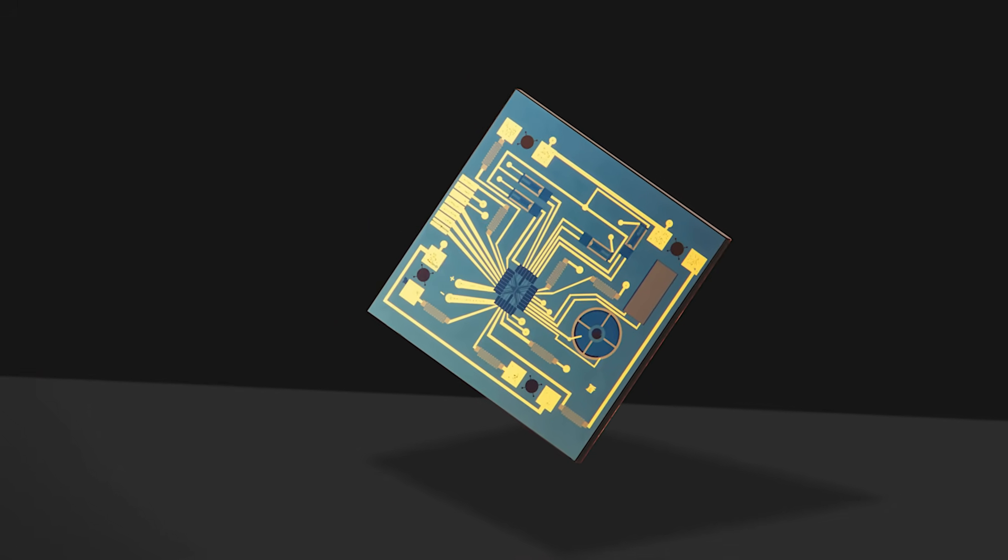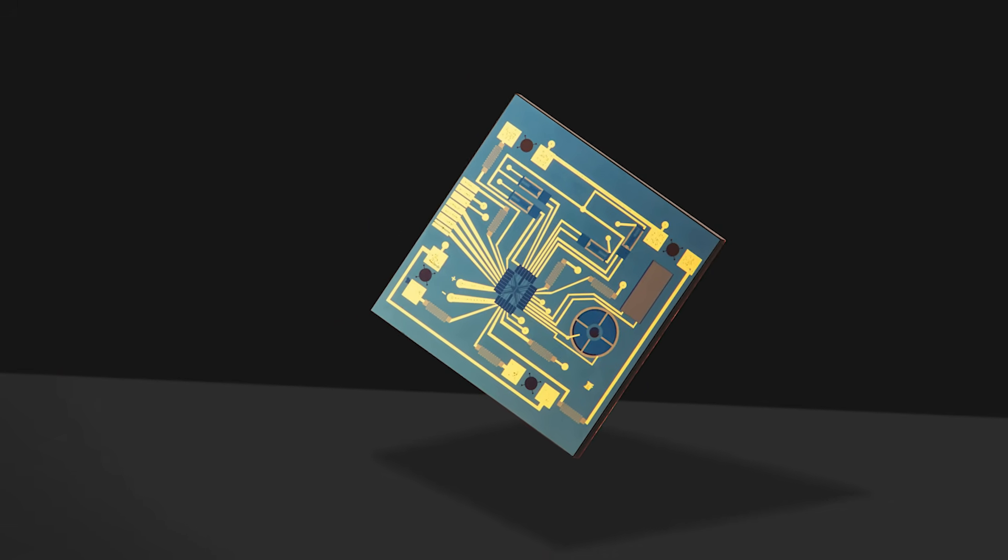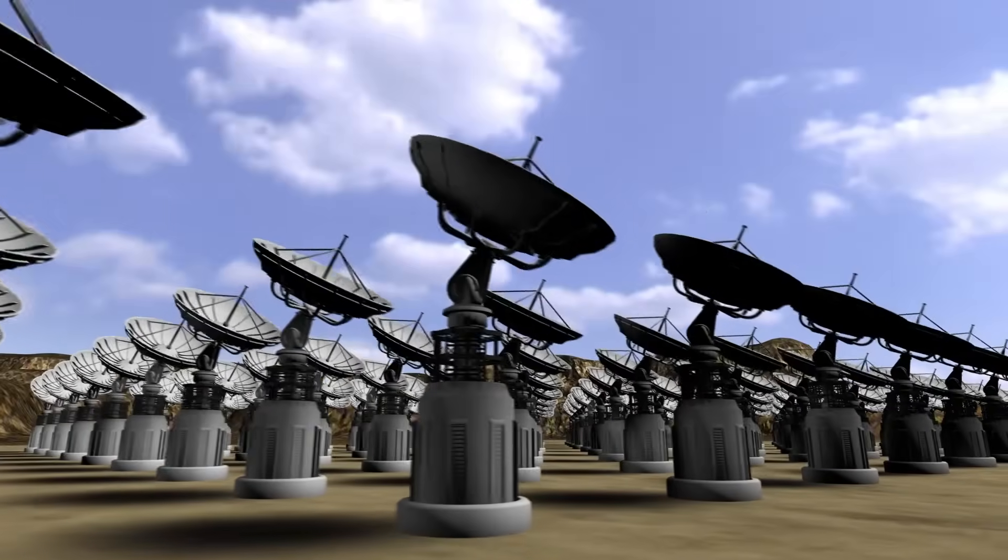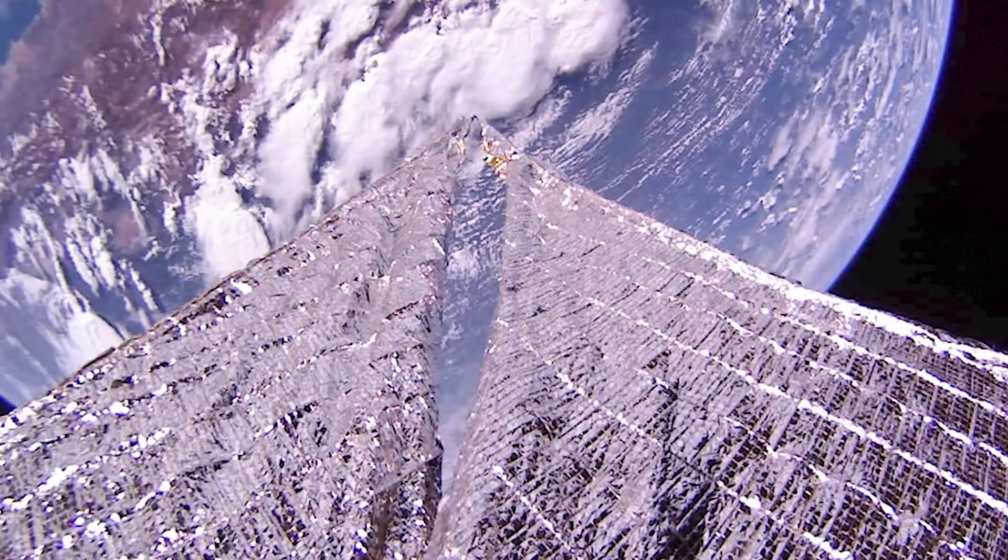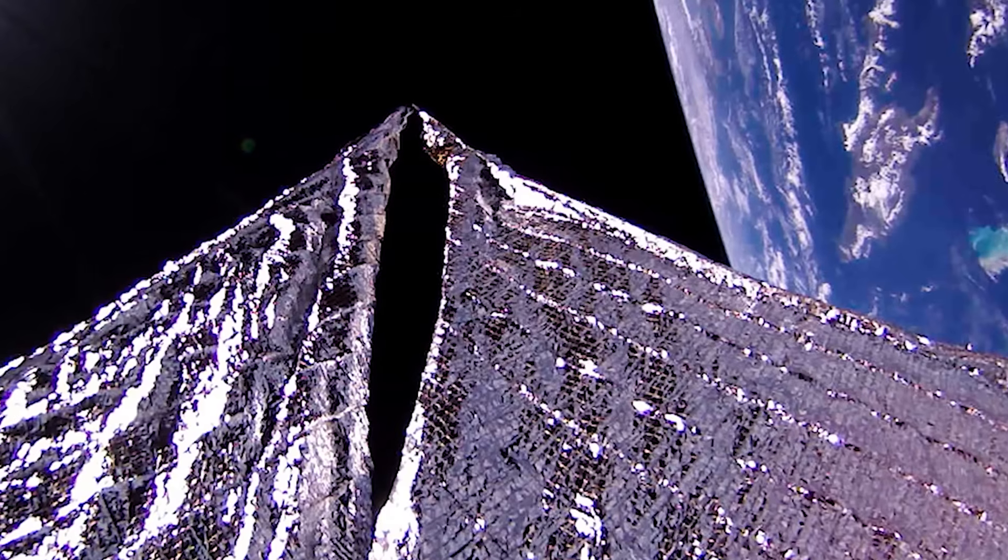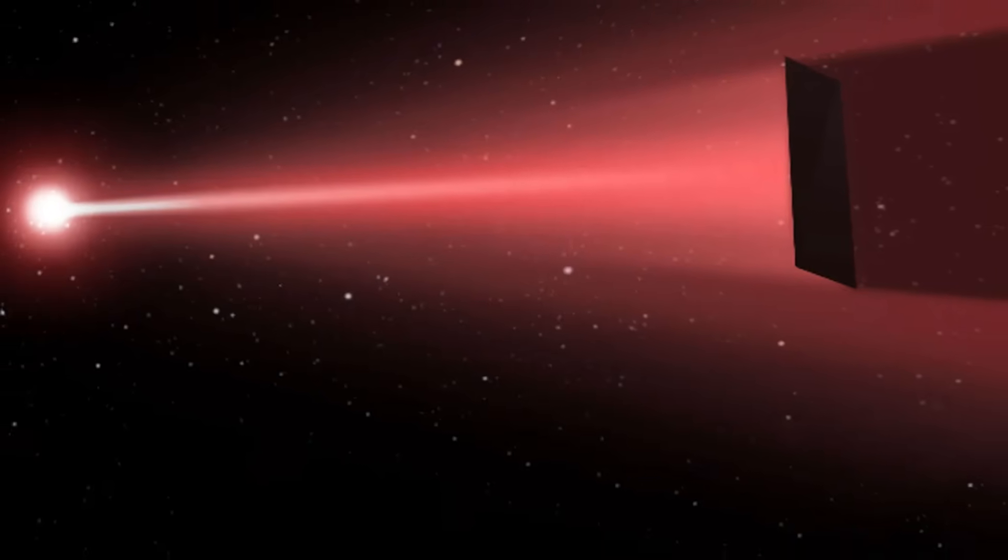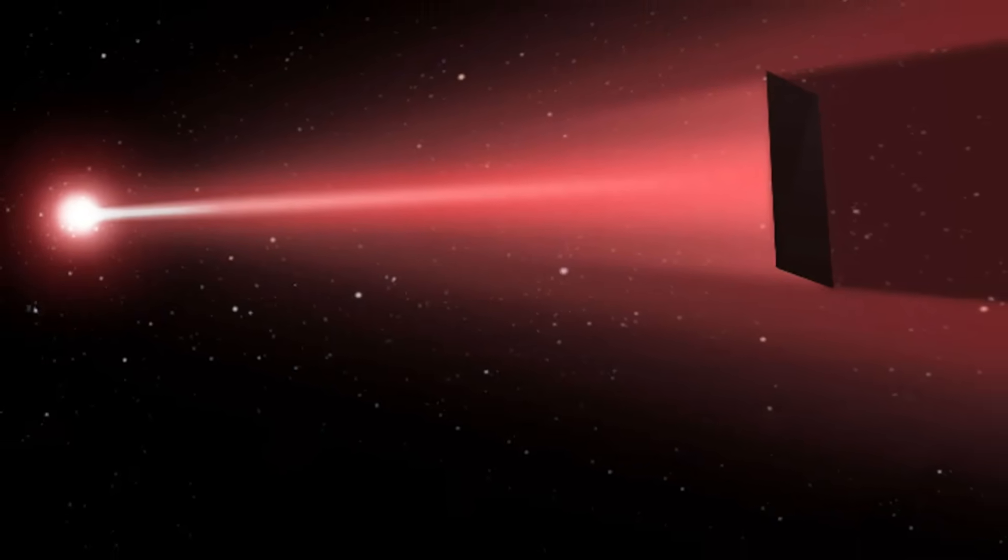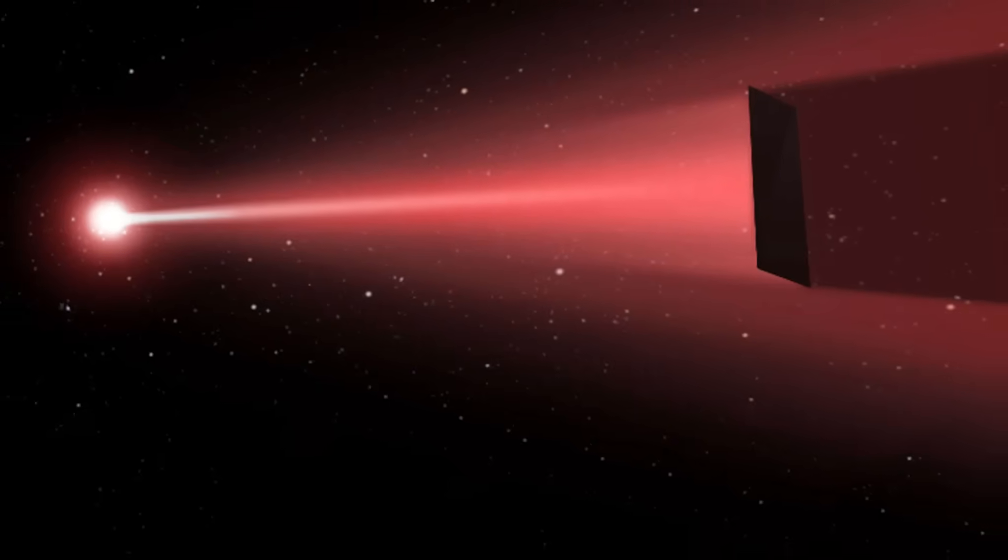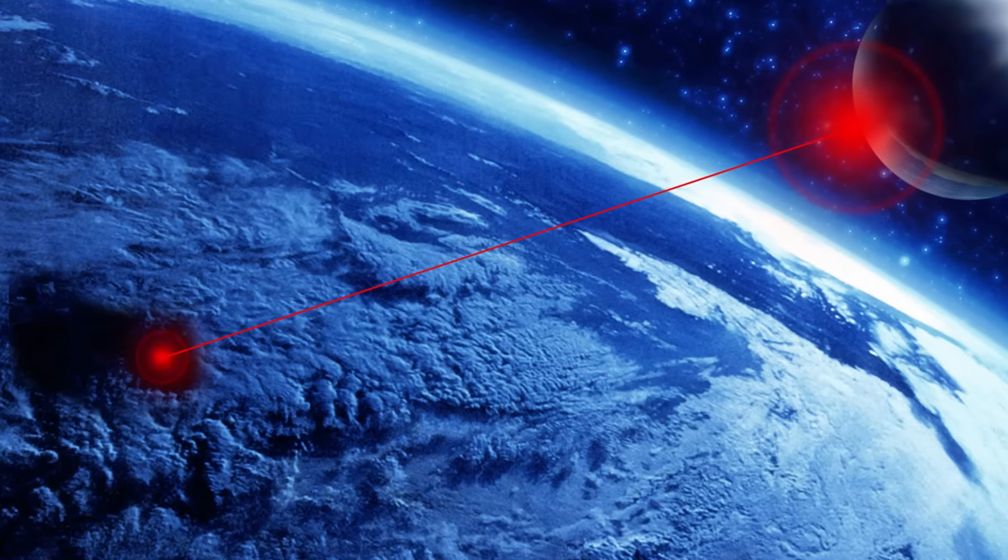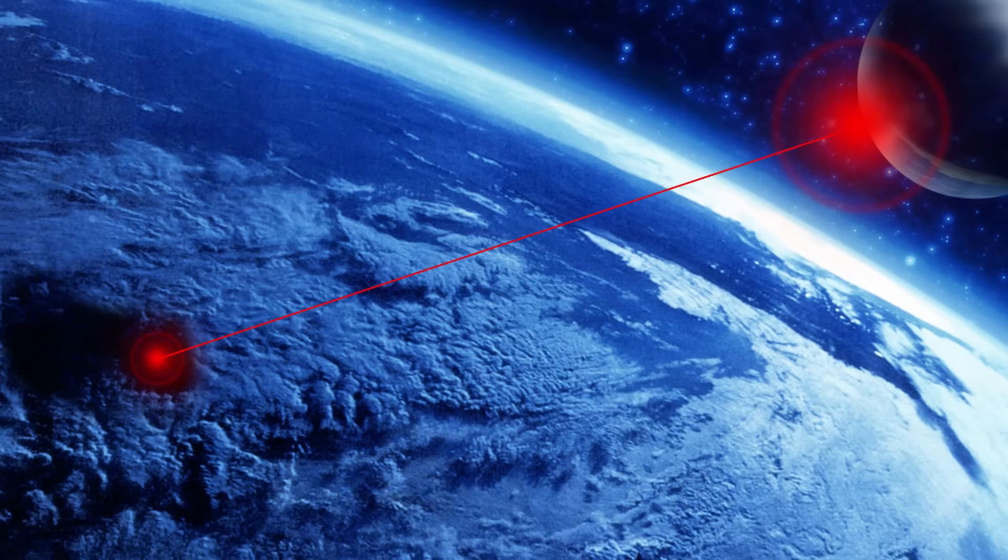Miniaturization and autonomy will be just as critical. One of the reasons Breakthrough Starshot bets on gram-scale probes is that smaller payloads are easier to accelerate. But shrinking everything creates a new set of challenges. How do you fit a high-gain antenna, a reliable power source, radiation shielding, navigation systems, and scientific instruments into something that weighs less than a sheet of paper? Advances in nanotechnology, quantum sensors, and ultra-efficient computing could help.